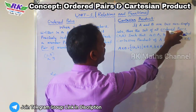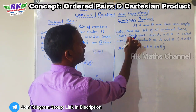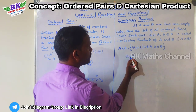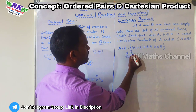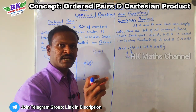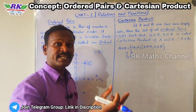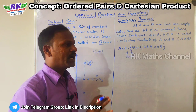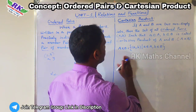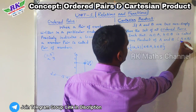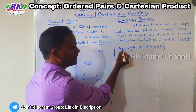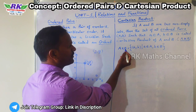Cartesian product — the set of all ordered pairs. For example, A cross B: the first element comes from A set, the second element comes from B set. This is the Cartesian product, also called the cross product.